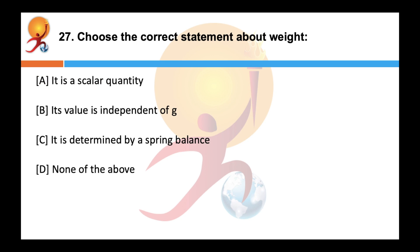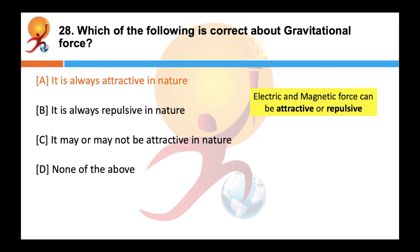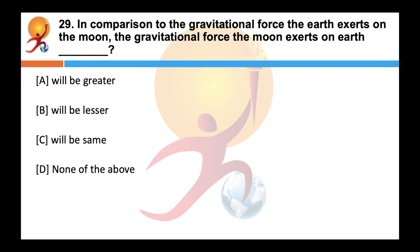Choose the correct statement about weight. The answer is C. Weight is an attractive force exerted by the earth on any body. Its value changes with g, varying from equator towards the poles. It is determined by a spring balance and is a vector quantity. The gravitational force is always attractive in nature, while electric and magnetic forces can be attractive or repulsive. Gravitational force is the weakest force in nature. The gravitational force the earth exerts on the moon equals the gravitational force the moon exerts on the earth — they are the same — even though the moon's mass is about 1.2% of the earth's mass.